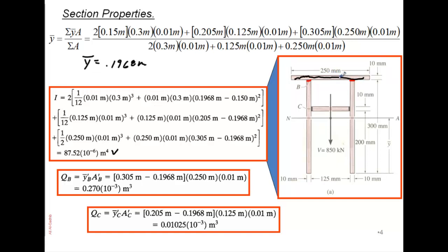For Q at B: take 0.250 × 0.01 (the area of the top section) multiplied by the moment arm, which is the distance from the neutral axis up to that section's centroid: 0.305 − 0.1968. For Q at C: take 0.125 × 0.010 multiplied by the distance from its centroid back to the neutral axis, giving the Q value for C.